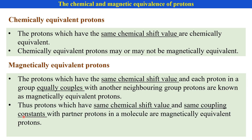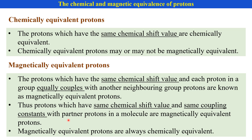In other words, protons which have the same chemical shift value and the same coupling constant with partner protons or neighboring protons in a molecule are magnetically equivalent protons. And magnetically equivalent protons are always chemically equivalent.